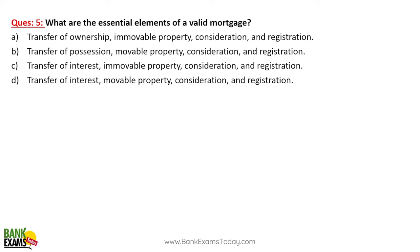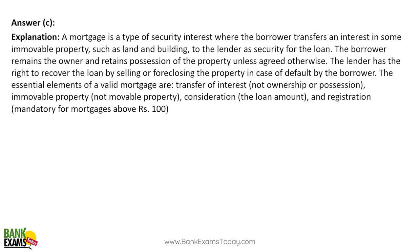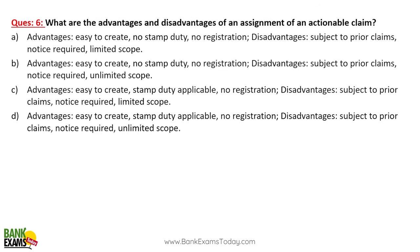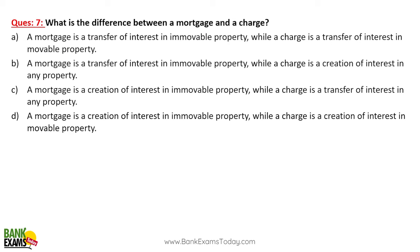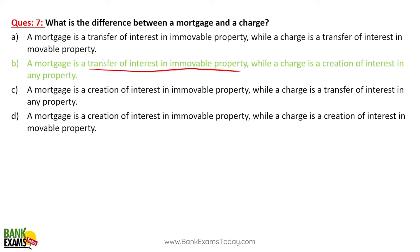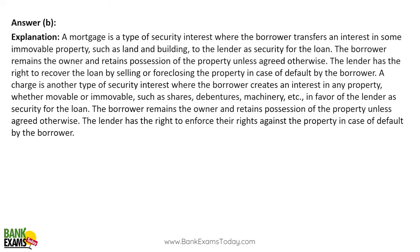Essential elements of a valid mortgage: there is a transfer of interest — not transfer of ownership, and possession does not transfer either. In case of a housing loan, it is about an immovable property, not a movable one. There is also consideration and registration. Difference between mortgage and charge: a mortgage is a transfer of interest in an immovable property — for example, a housing loan — while a charge can be created on any property.